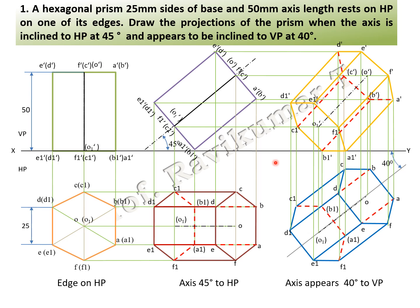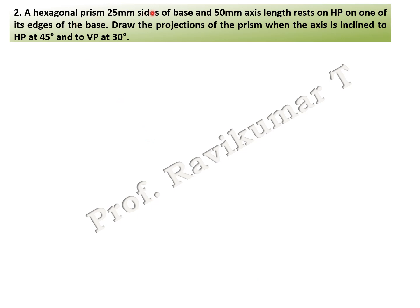The next problem is similar: hexagonal prism, 25 mm sides, 50 mm axis length, edge condition. But in this problem the word 'appears' is absent — the axis is inclined to both HP at 45 degrees and VP at 30 degrees. Since 'appears' is not present, it is a with-locus problem. The first and second positions are the same as the previous problem.